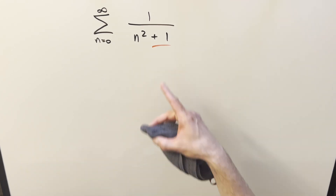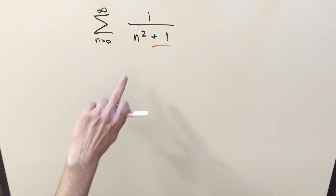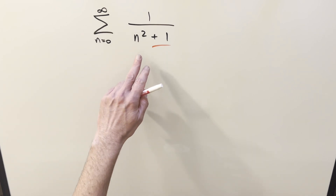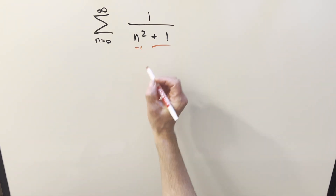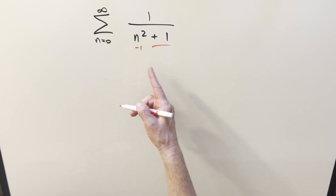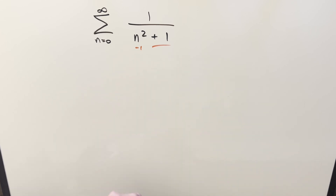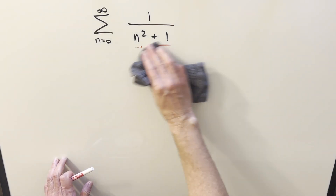My first thought was to do an index change to get rid of the plus 1. But you can't really do that — you can do the index change, but it's not going to help because if we change this to like n minus 1, you multiply it out and now it becomes a plus 3. So it doesn't clean it up the way it would if we just had 1 over n plus 1.